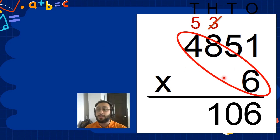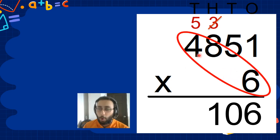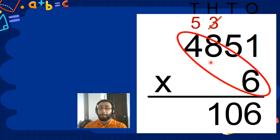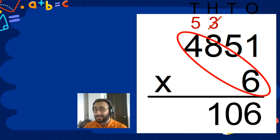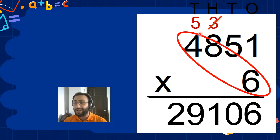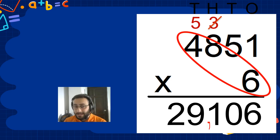Now we have to do 8 times 4. 8 times 4 is 32. But don't forget, we have a 6 here. So 32 plus 6 equals 38. So we got the answer: 38,408.